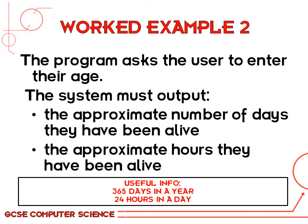The first thing is the program is going to ask the user for something, so we need an input. We also want to do two different calculations and two different outputs. The first calculation: whatever the user inputs, we want to multiply that by 365, because that's how many days are in a year. Second: we want to multiply the number of days by 24 hours. When we've got these two values, we can output them to the screen.